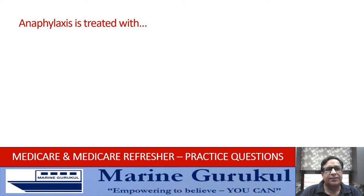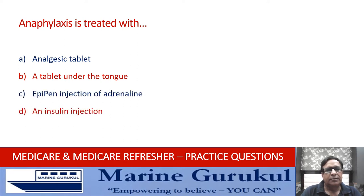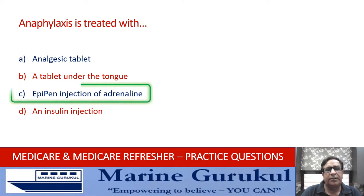Anaphylaxis is treated with: an analgesic tablet; a tablet under the tongue; an EpiPen injection of adrenaline; or an insulin injection. Anaphylaxis is basically a severe allergic reaction. It's treated with an EpiPen injection of adrenaline. The answer is C.